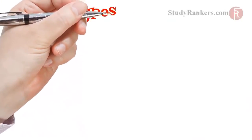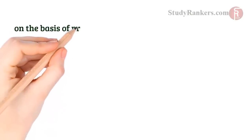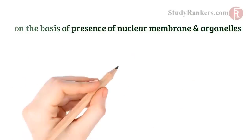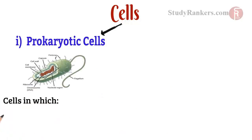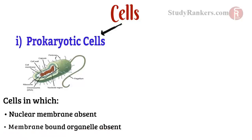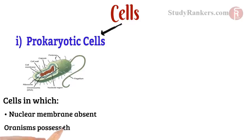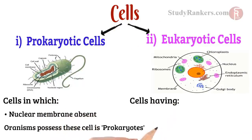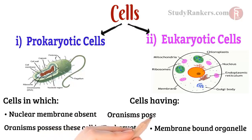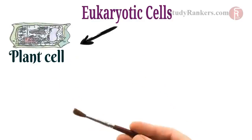Now we will study about the types of cells. In this chapter, we will study cells on the basis of presence of nuclear membrane and organelles. Cells are of two types. First, prokaryotic cells — cells in which the nuclear material is not enclosed by a nuclear membrane and membrane-bound cell organelles are absent. The organisms that possess these kinds of cells are known as prokaryotes. Second, eukaryotic cells — cells having a well-defined nucleus and membrane-bound cell organelles. These are termed eukaryotic cells, and they are of two types: plant cell and animal cell.